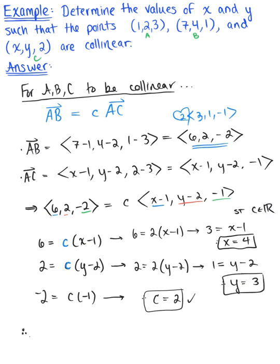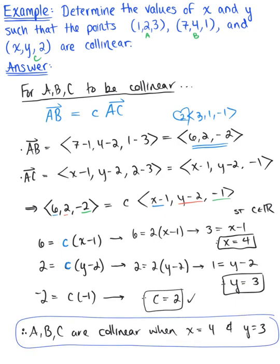And there you have it, so A, B, and C are going to be collinear points or they exist on the same line when x is equal to 4 and y is equal to 3. And this is our final answer. Thank you.